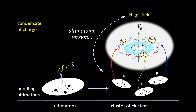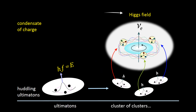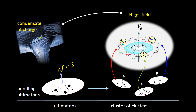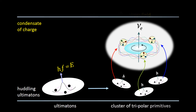And as we'll see, this condensate of charge — this Higgs-type field — turns out to be a lot like segregata, the very stuff from which ultimatons are made. Of course, if standard model particles like electrons, neutrinos, and quarks really are built up from clusters of huddling ultimatons, then once again our ideas about what's elementary will need to change.